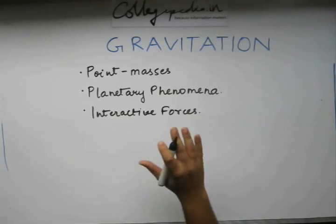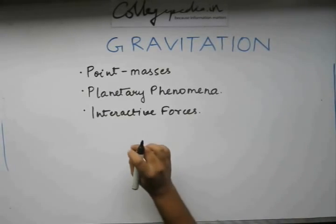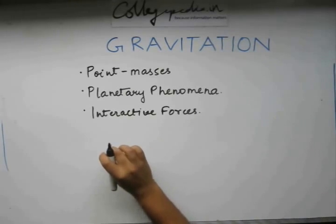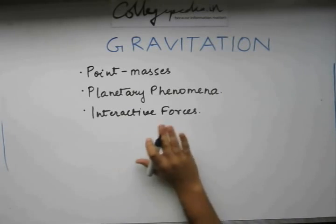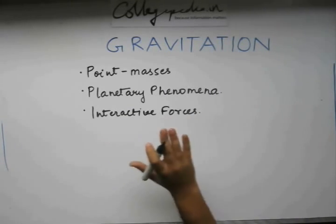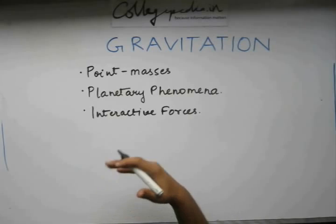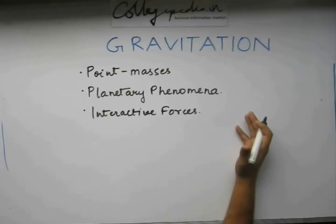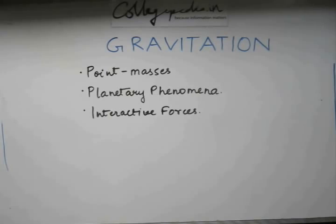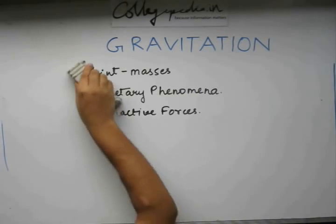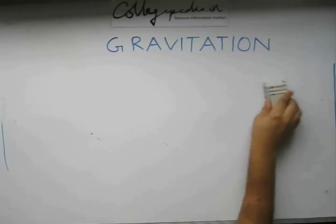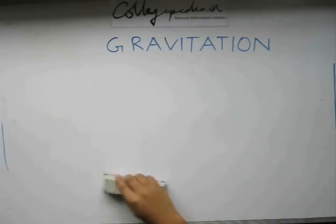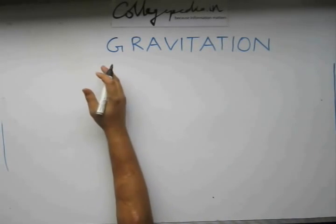To learn about gravitation, the first thing we need to start with is the first basic three laws which govern a lot of things about planetary motion or motion of various celestial bodies. These basic three laws have been formulated by a great scientist Kepler and hence came to be known as Kepler's laws.